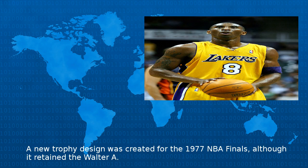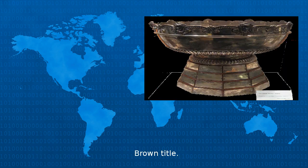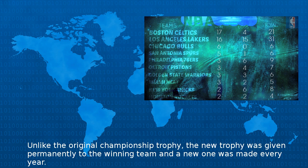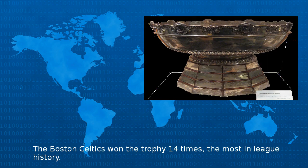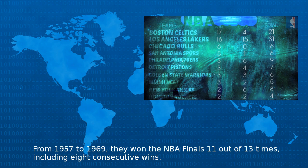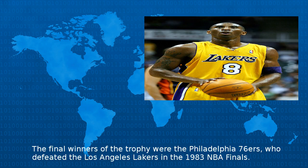A new trophy design was created for the 1977 NBA Finals, although it retained the Walter A. Brown title. Unlike the original championship trophy, the new trophy was given permanently to the winning team and a new one was made every year. The inaugural winners of the trophy were the Philadelphia Warriors, who defeated the Chicago Stags. The Boston Celtics won the trophy 14 times, the most in league history. From 1957 to 1969, they won the NBA Finals 11 out of 13 times, including eight consecutive wins.